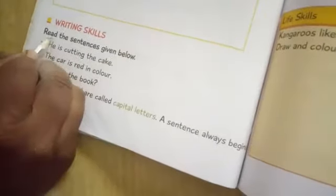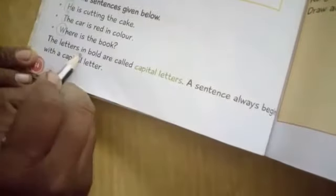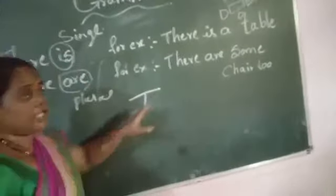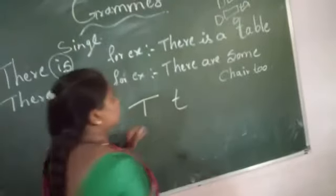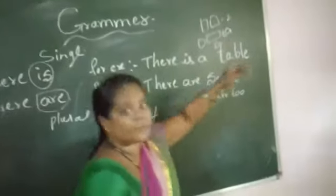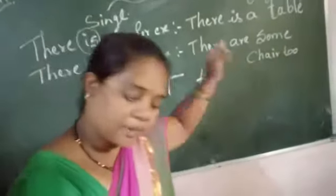Now coming to writing skill. Read the sentences given below. For example: 'He is cutting the cake.' Highlight the letter H — it is a capital letter. 'The card is red in color' — highlight the T. 'Where is the book?' — highlight 'Where.' The letters highlighted are called capital letters. Every sentence always begins with a capital letter. For proper nouns like 'India,' which is a country name, we also use a capital letter.